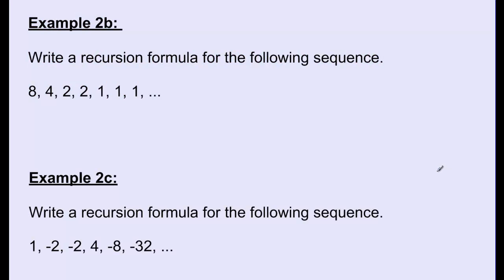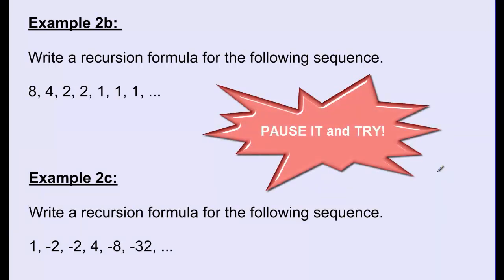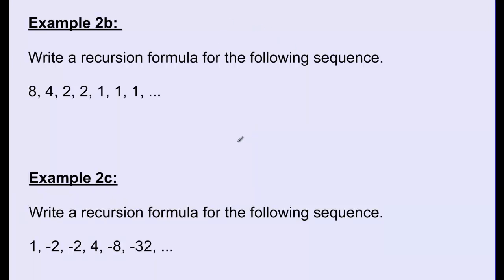Here are two more examples — write recursion formulas for each. For example 2b, the sequence is 8, 4, 2, 2, 1, 1, 1. It looks like we're decreasing, but the differences aren't constant. The actual pattern is division: 8 divided by 4 is 2; 4 divided by 2 is 2; 2 divided by 2 is 1; 2 divided by 1 is 1. From there the pattern continues as all 1s, since 1 divided by 1 is 1.